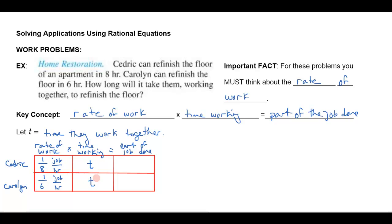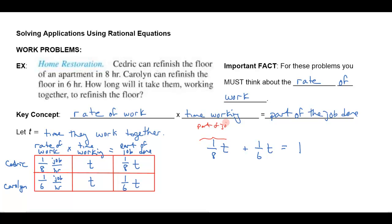What I don't know is the time t they spend working together. Cedric works t hours, Carolyn works t hours. Multiplying t hours times one-eighth of the job per hour gives the fraction of the job Cedric does; t hours times one-sixth gives the fraction Carolyn does. I want to find the value of t where the part done by Cedric plus the part done by Carolyn equals one whole job. So the equation is: (1/8)t + (1/6)t = 1.